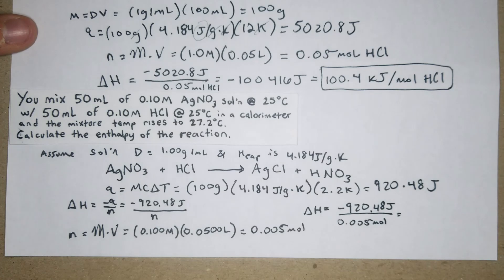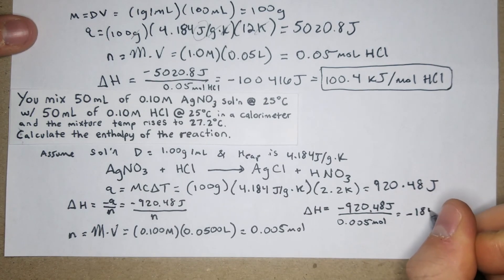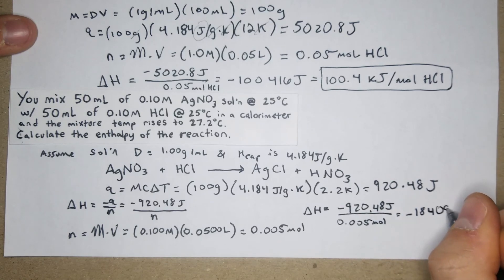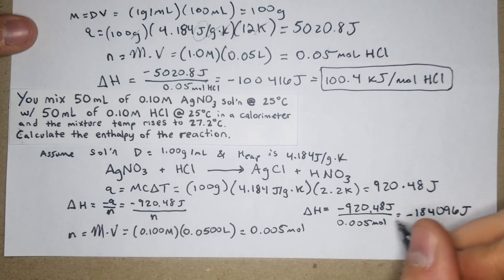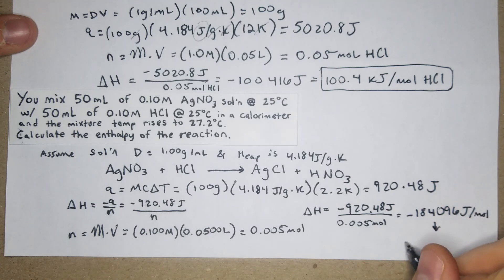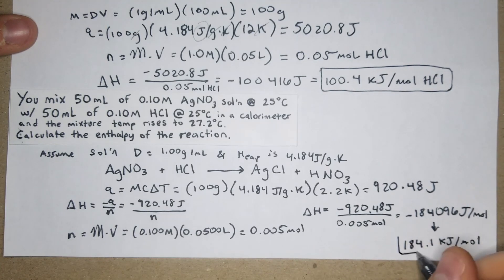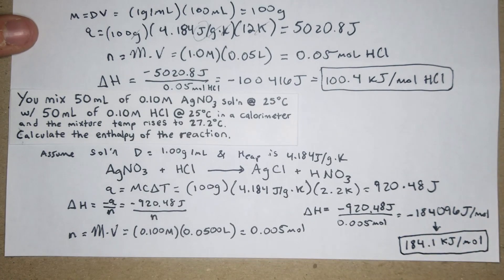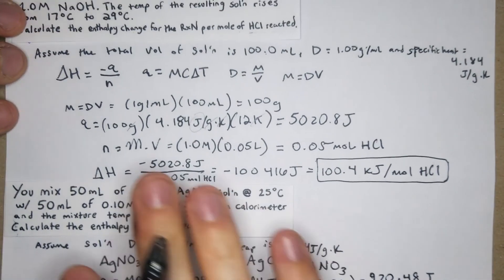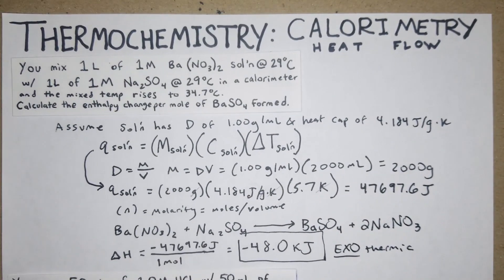So ΔH = −920.48 J / 0.005 mol = −184,096 J/mol, which converts to −184.1 kJ/mol. That's our final answer. Those are three calorimetry heat-flow problems — hopefully this helps!